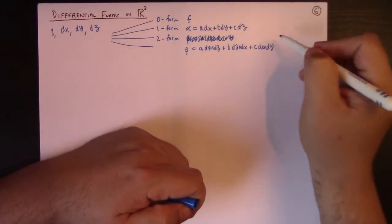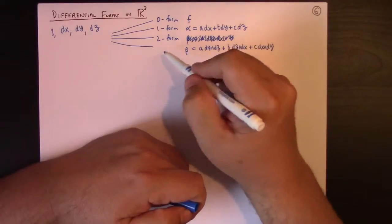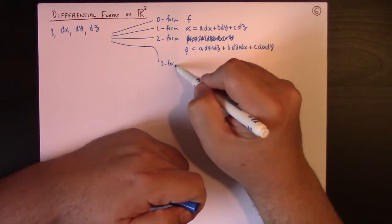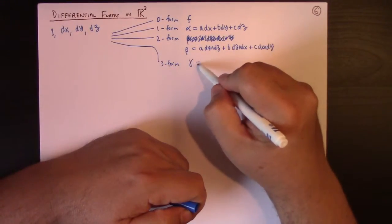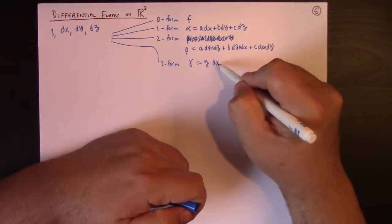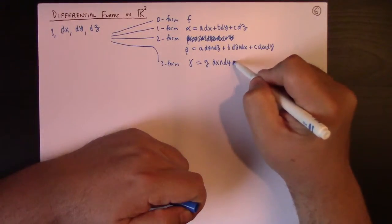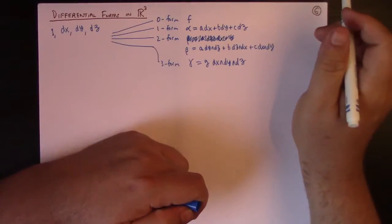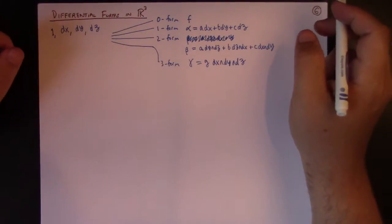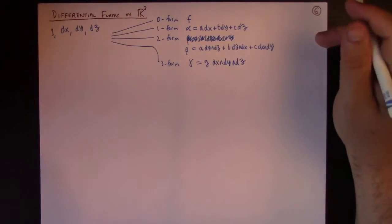Again, A, B, C being functions. And then a 3 form, something like gamma, some function G dx wedge dy wedge dz. Of course that's the top form, right? So these are your differential forms in R3.